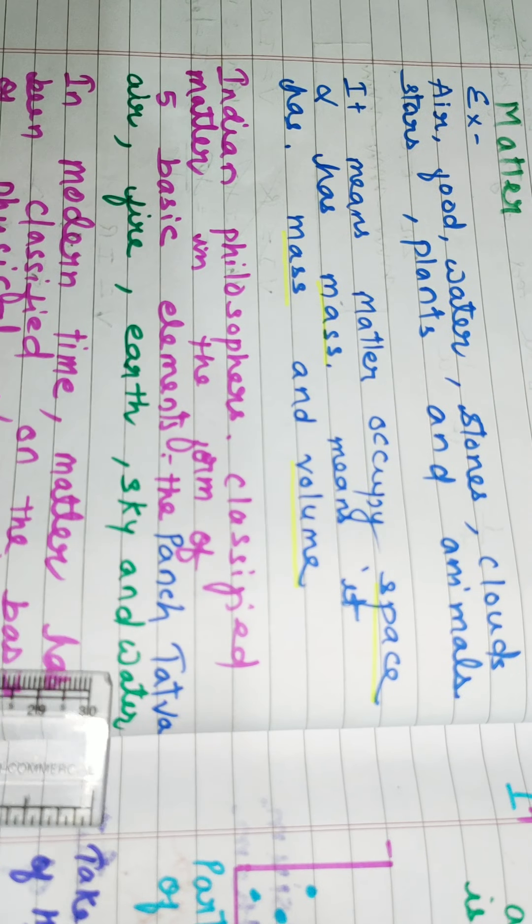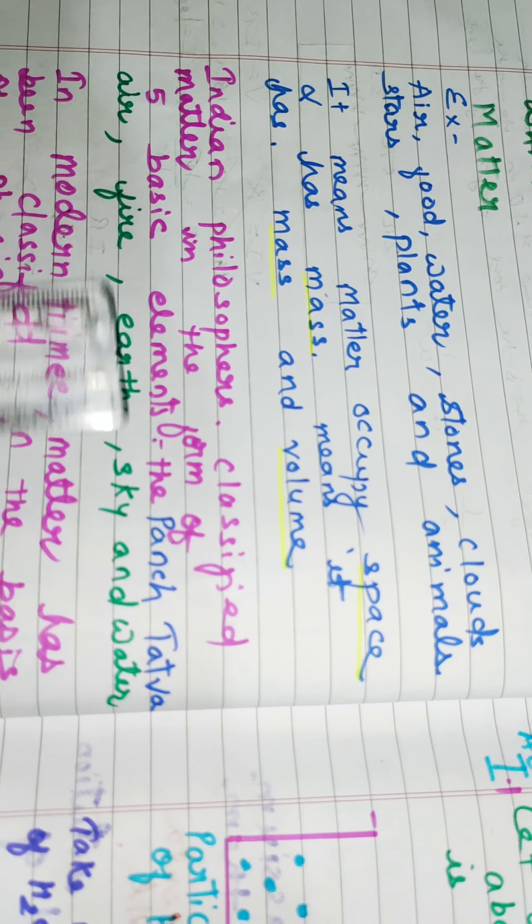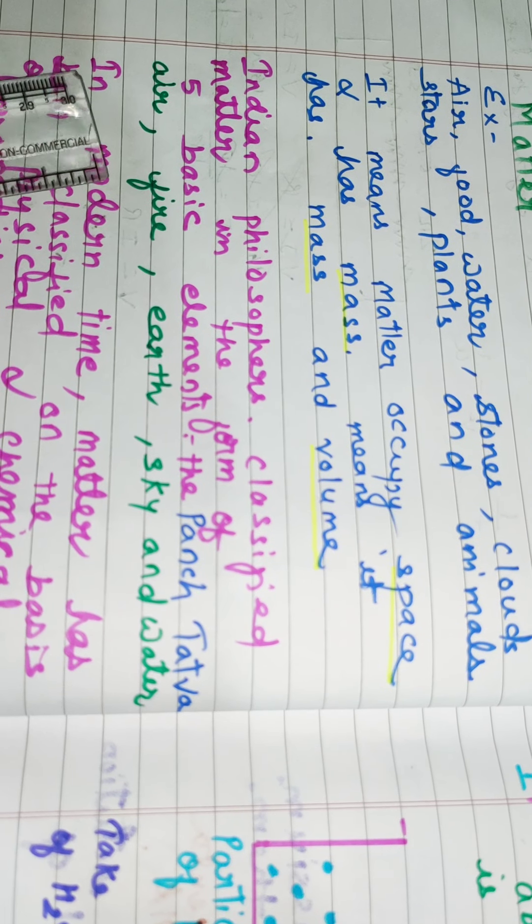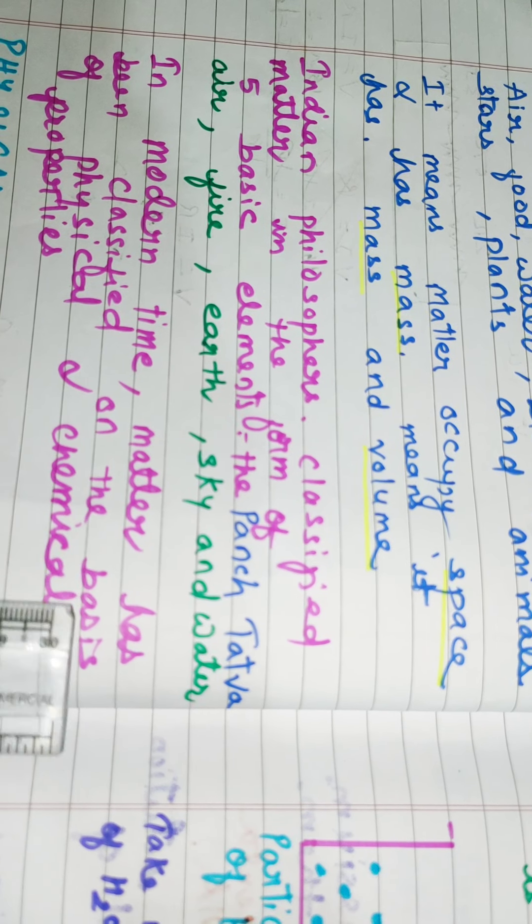Indian philosophers classified matter in the form of five basic elements, Panchitatva: air, fire, earth, sky and water.